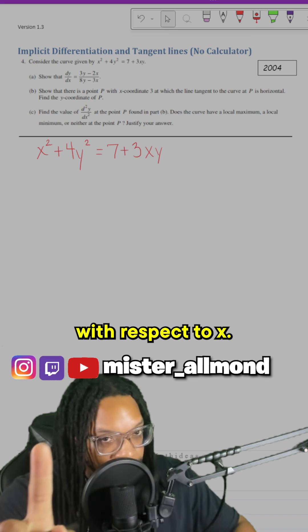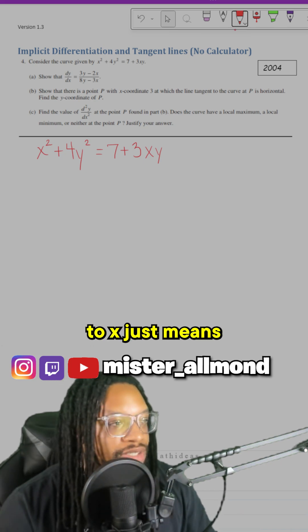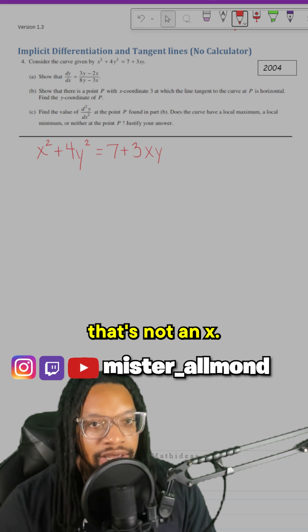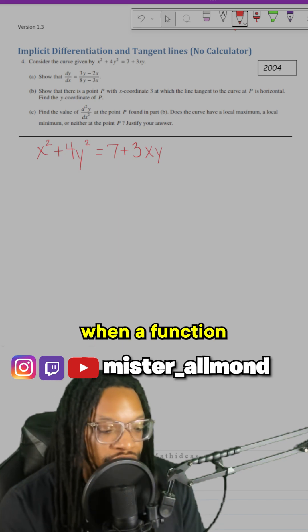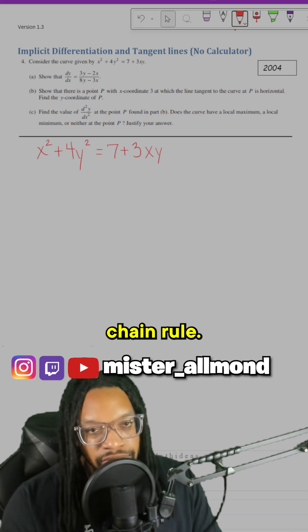Derive every term with respect to x. Remember, with respect to x just means any variable that's not an x, treat it like a function of x. And what happens when a function is applying another function? Chain rule.